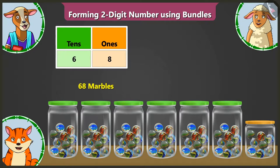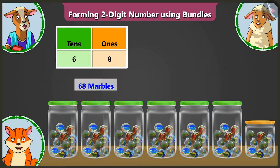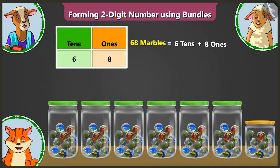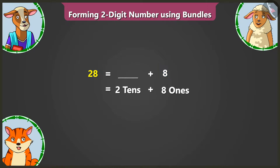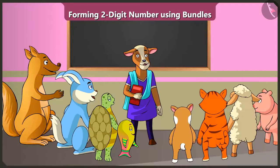Yes. Well done. Now, children, I will teach you how to expand 68 into two parts. 68 has 6 tens and 8 ones. So 6 tens means we have to write 60, and 8 ones means we have to write 8 here. Come on, Billy. Now try to expand and tell the numbers written here on the board. 28 has 2 tens and 8 ones. So 28's expansion is 20 and 8. Very good, children. Now see you in the next class.